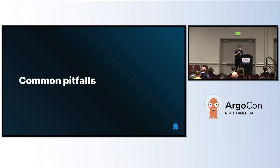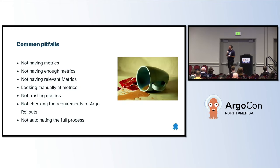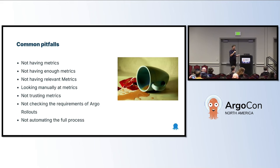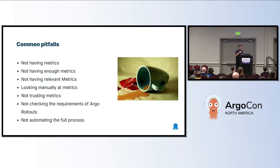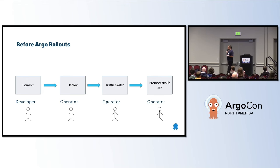Some common mistakes: first of all, you need to have metrics — that's obvious. But most importantly, you need to have the correct metrics. Several people either don't have metrics at all, or if they do, they don't trust them. You need to have metrics that you trust. Also, you need to automate everything. I've seen companies with a fully manual process in place — a developer commits, an operator makes a deployment, then somebody makes a switch.